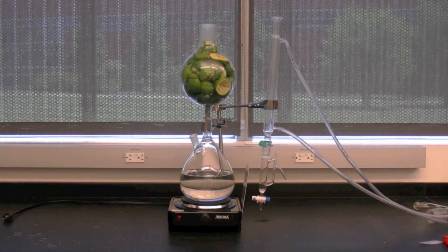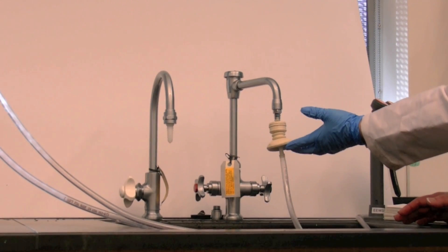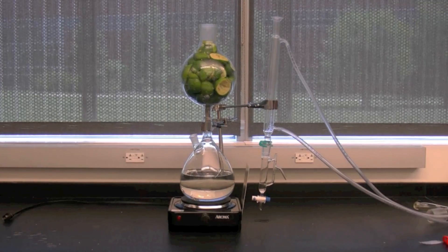Cold water should enter at the bottom and exit out the top. Connect the inlet condenser tubing to the cold tap water using the cream-colored faucet adapter. Make sure the outlet condenser tubing drains into the sink.